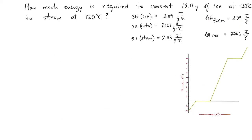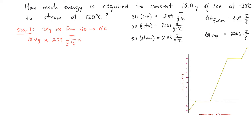Let's look at a problem: how much energy is required to convert 10 grams of ice at -20°C to steam at +120°C? I've written down all the conversions we'll need. This problem has five steps. Step one covers the transition from -20°C to 0°C. We take our 10 grams of ice, multiply by the specific heat of ice (2.09 joules per gram per degree Celsius), then multiply by the temperature change of 20 degrees Celsius. That gives us 418 joules for step one.